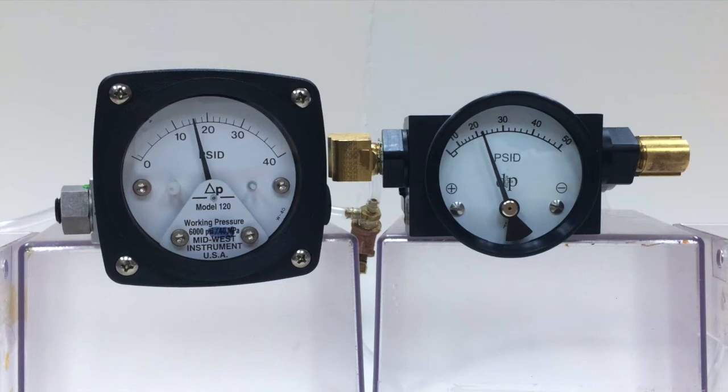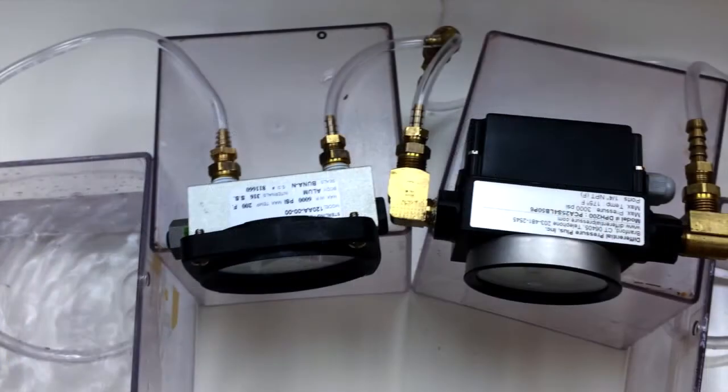Pressure will be introduced to the high side of both gauges at about 22 psi and as we look from the top you can see that I have the same line connected to both gauges.